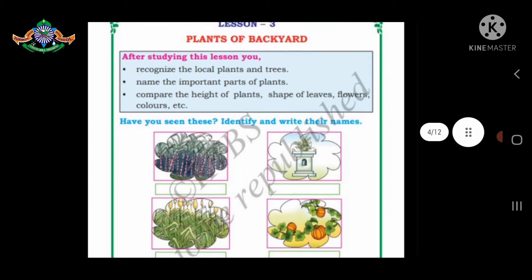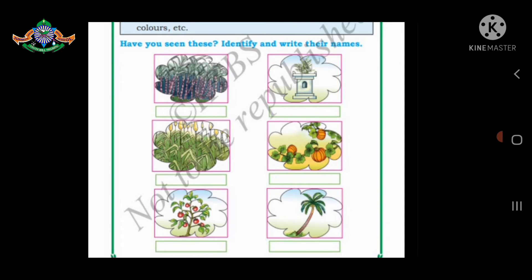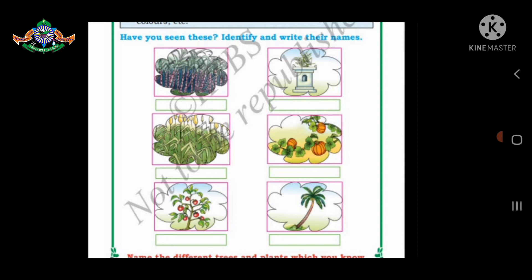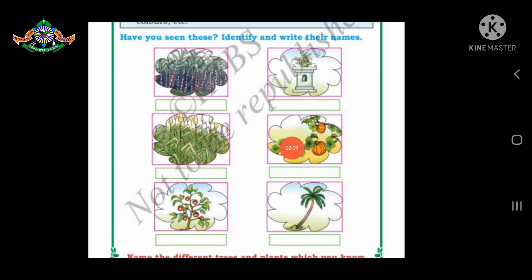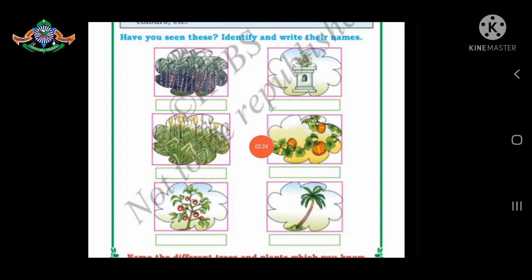Here you can see some pictures. You have to identify and write their names. Which plant is this? Have you seen this around your house? This is sugarcane. This is tulsi. This is corn plant. Pumpkin creeper. And this is tomato. And this is coconut tree.